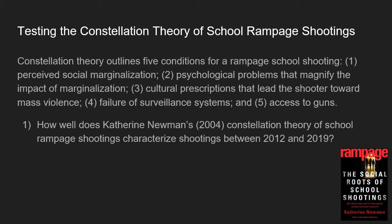Because Newman's book was published in 2004, there have been many shootings since that point. This student was able to develop a question to test how the constellation theory accounted for school shootings that occurred between 2012 and 2019.